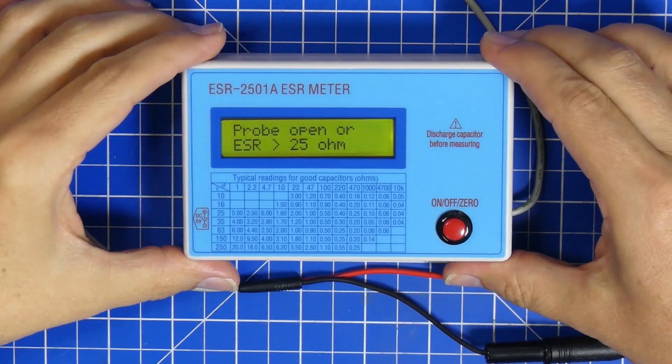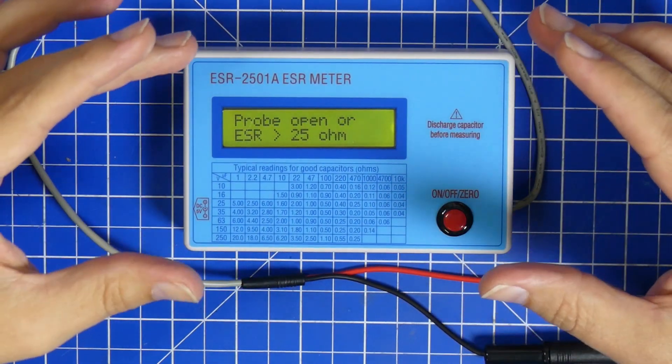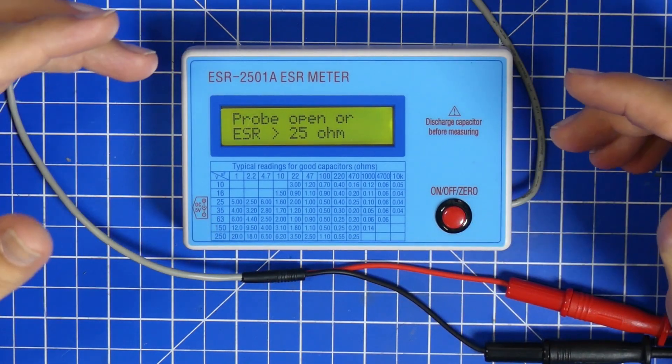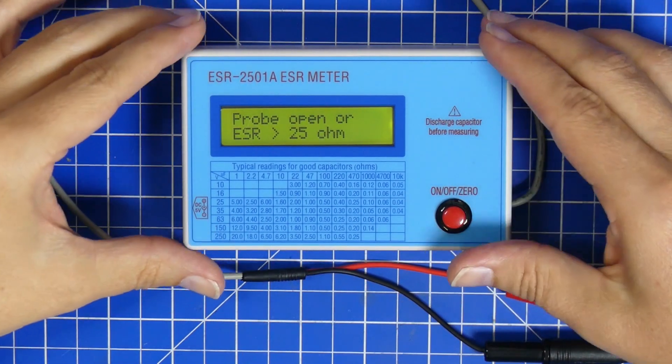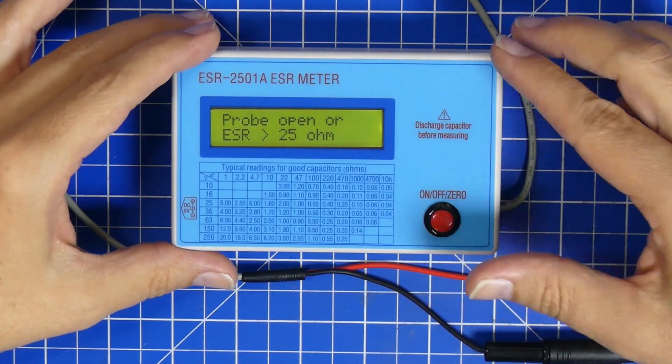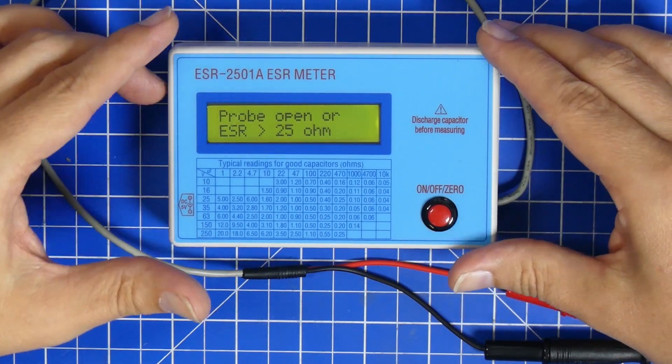This here is my in-circuit capacitor ESR meter. It's a pretty nifty little tool which allows you to measure the quality of a capacitor without removing it from whatever it's built into.